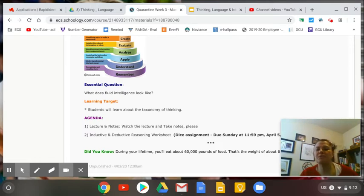We're going to talk about something known as Bloom's Taxonomy today. This is actually our last of our thinking lessons. We're going to be moving on to language next week. You need to take notes on this short abbreviated lecture, and then we have a second dice assignment that will be due on Sunday at 11:59. Let's go ahead and get started.